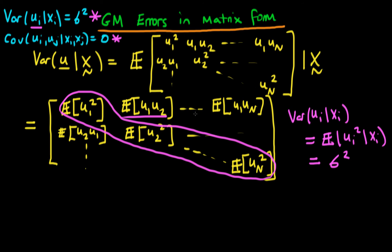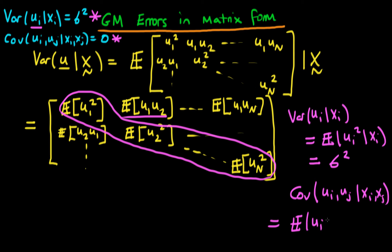What about the off-diagonal components? Well, in terms of our condition of no autocorrelation, we require the covariance of ui with uj to be equal to zero. The covariance of ui with uj given xi and xj is just equal to the expectation of ui times uj given xi and xj, because we're assuming the individual expectations of ui and uj are both equal to zero. These are what we have in our matrix in terms of the off-diagonal components, and in order to have no autocorrelation we require that each of these off-diagonal components must be equal to zero.